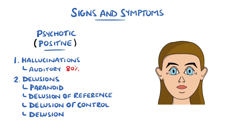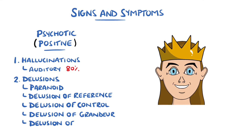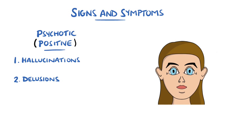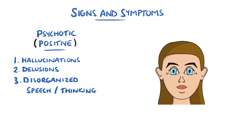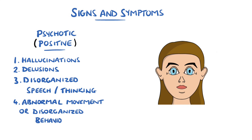There can be delusions of grandeur, meaning believing oneself to be a figure of great importance, and delusions of erotomania, meaning believing a person — typically of higher status — is in love with them. Another positive symptom is disorganized speech or thinking, which can manifest as jumping from topic to topic, speech that makes no sense (termed 'word salad'), or stopping in the middle of a sentence. Abnormal and often repetitive movements are also included here, as is disorganized behavior.